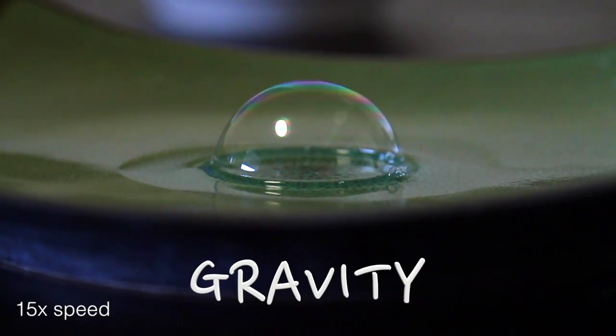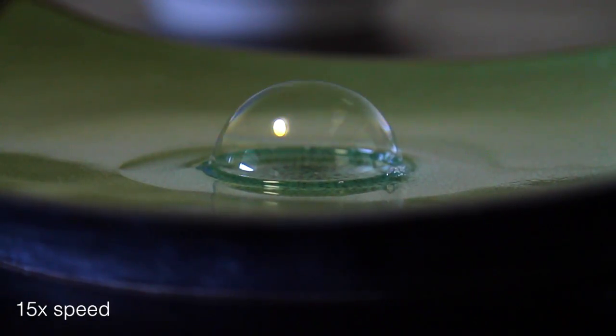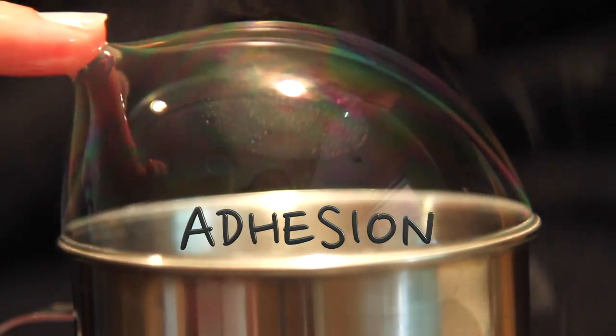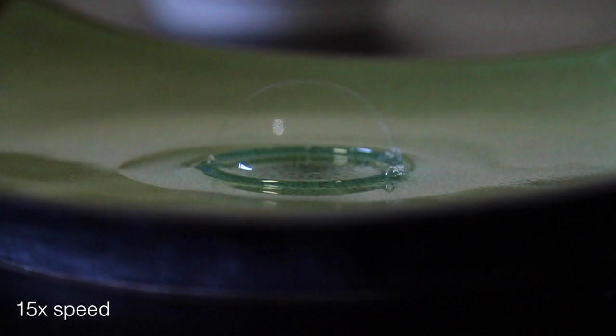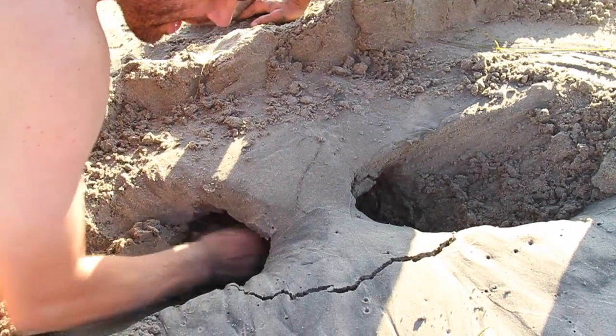One factor is gravity. Gravity pulls the soap and water molecules down, aided by adhesion or the stickiness between the molecules, until eventually you're left with a super thin film on the top of the bubble that eventually breaks, like a sand tunnel that gets too thin and collapses.